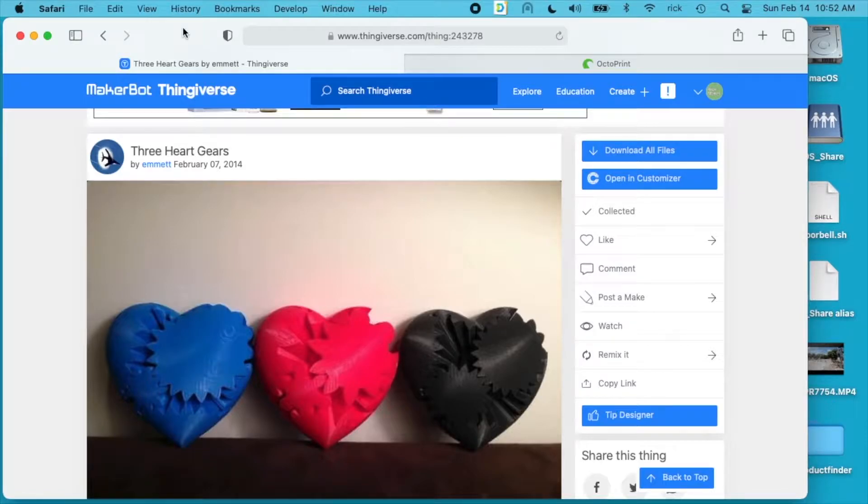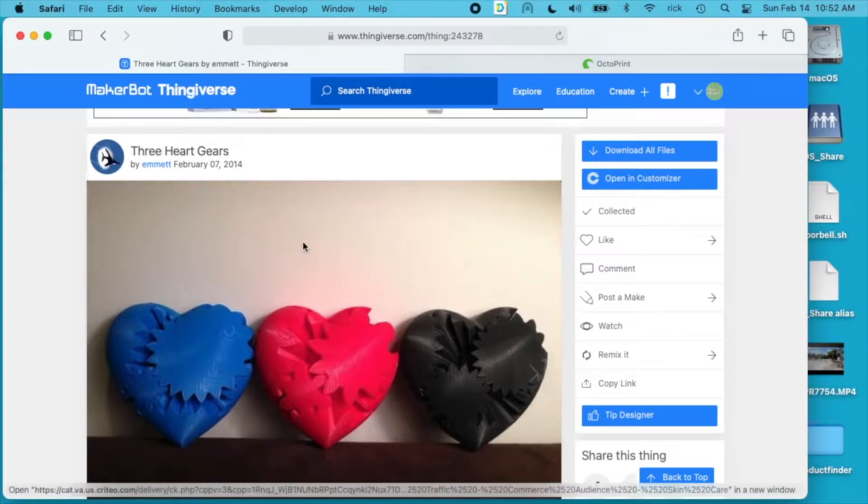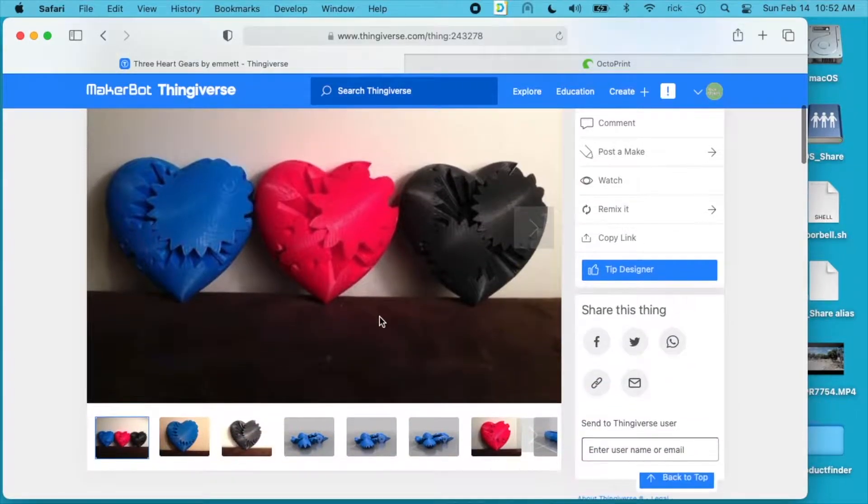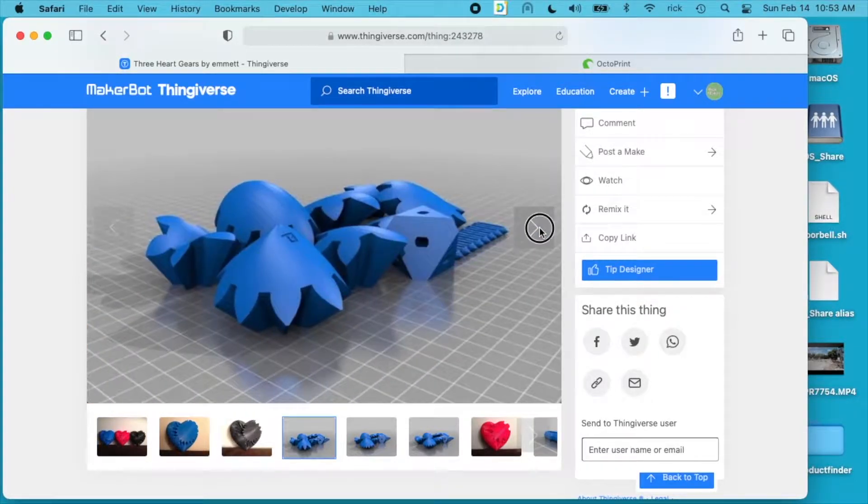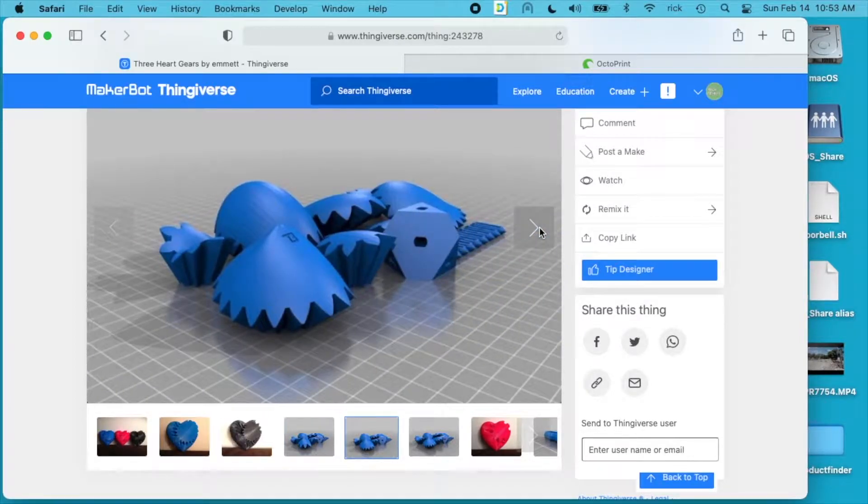In this video I'm going to be printing one of these heart gears. These are a bunch of gears that you combine together to make this heart that has some 3D function to it, kind of like a fidget device. If I scroll through these pictures here you can see what it looks like, and I'll put a link in the description of this on Thingiverse where you can download this model.